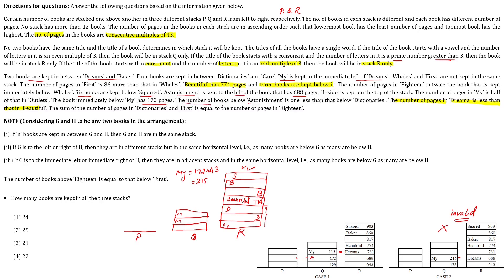The number of books below Astonishment is one less than that below Dictionaries. Below Astonishment there is one book, so below Dictionary there will be two. The only valid position for Dictionary is fixed, since Dreams is at the third position in one stack and My is at the third in another. Four books are kept between Dictionaries and Care, confirming Care's position. So Care is placed here only.